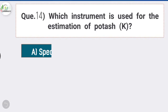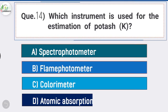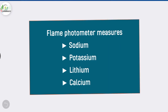Question number fourteen: which instrument is used for estimation of potash? Answer is option B, flame photometer. Potash is estimated using a flame photometer, which also measures sodium, lithium, and calcium.